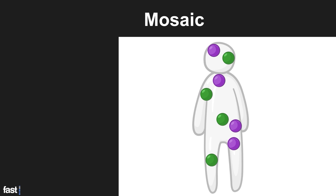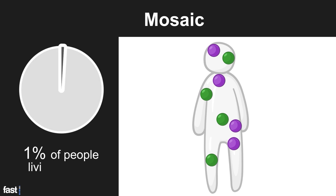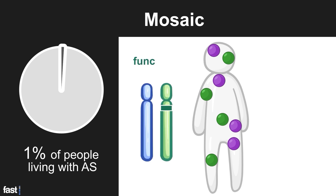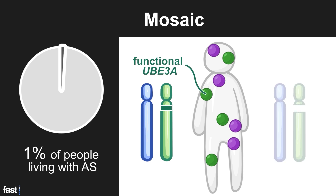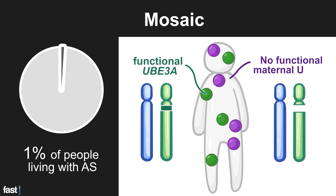Mosaic, the rarest AS genotype, occurs in about 1% of people living with AS. In the mosaic genotype, some cells contain a functional UBE3A gene and some cells do not, resulting in normal UBE3A protein in some cells and no UBE3A protein in others.